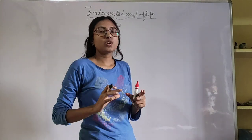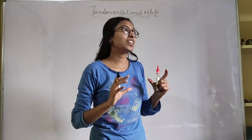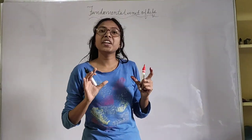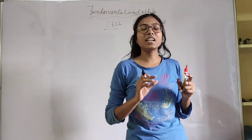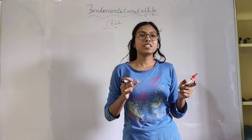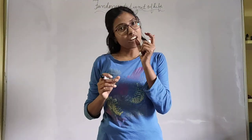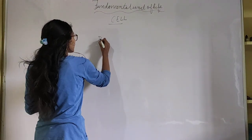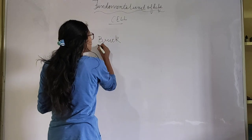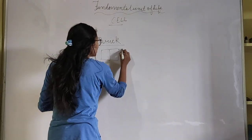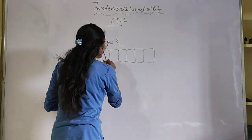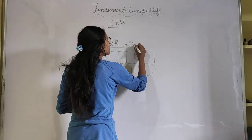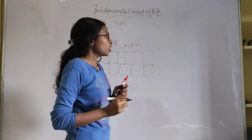Think of a building being constructed. The main ingredients needed for construction are bricks, cement, sand, and many more things. But the functional unit through which a building is made is the brick. A single brick, when combined with others, forms a huge building. So this single brick can be considered as a cell for that building.